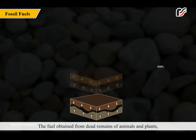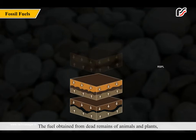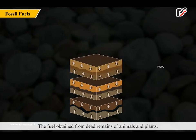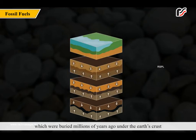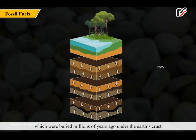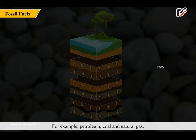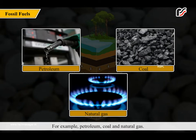Fossil fuels are obtained from the dead remains of animals and plants which were buried millions of years ago under the earth's crust. Examples of fossil fuels include petroleum, coal and natural gas.